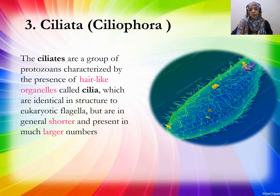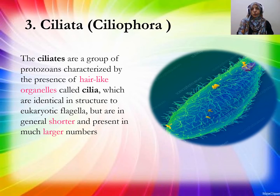Cilia are small and present in much larger numbers. Flagella are one, two, or three in number, whereas cilia are very numerous.